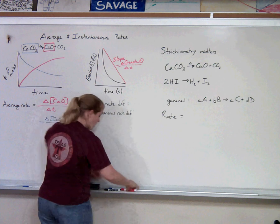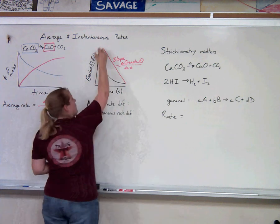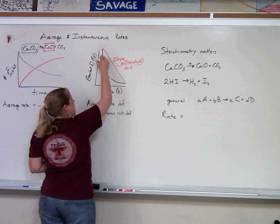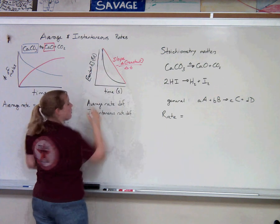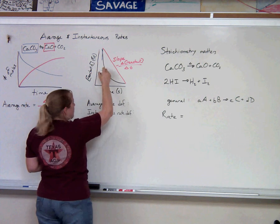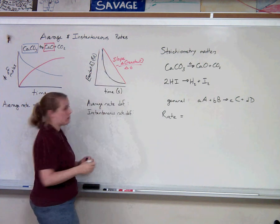Instantaneous rate, however, is the rate at any given moment. So in that case, that's the slope of a line at tangent to the curve at that point. Or we can say the slope of a line tangent to the curve at that point.